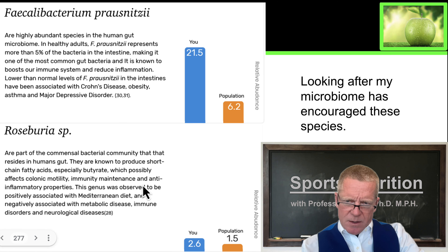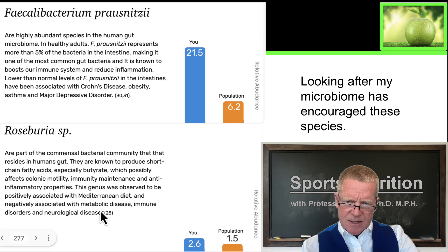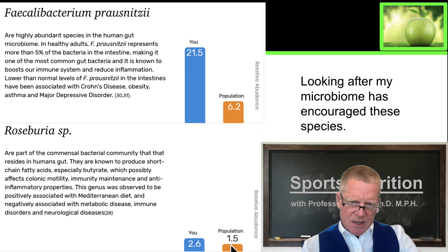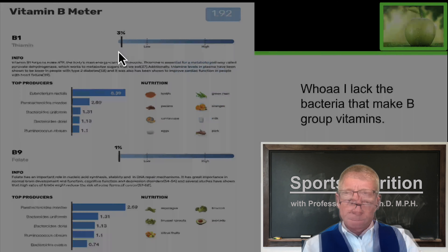Roseburia is another important bacteria that's associated with the Mediterranean diet and negatively associated with metabolic disease. That means the higher you go, the less metabolic disease, immune disorder, or neurological diseases. Again, I'm higher than the regular population, which is pretty encouraging.